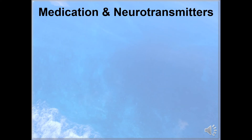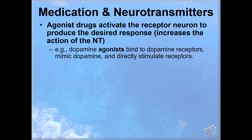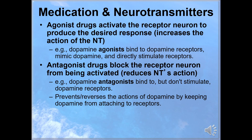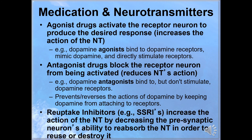Given the variety of things that could go wrong in this process, different medications help these processes in different ways. Agonist drugs activate the receptor neuron so that it can produce the desired response — this increases the action of the neurotransmitter. For example, dopamine agonists bind to dopamine receptors, meaning they're mimicking dopamine, and that will directly stimulate the receptors. Antagonist drugs block the receptor neuron from being activated, reducing the neurotransmitter's action. Dopamine antagonists bind to, but don't stimulate, dopamine receptors, preventing or reversing the actions of dopamine by keeping dopamine from attaching to the receptor sites. Reuptake inhibitors, such as Prozac and other SSRIs, increase the action of the neurotransmitter by decreasing the presynaptic neuron's ability to reabsorb it in order to destroy or use it — as a result, more is left available for use.